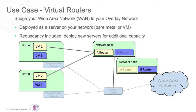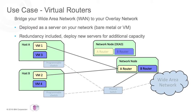Since this is the data center and not your home's network, we make sure that a network node has redundancy. Therefore, if a network node fails, the virtual routers running on it will fail over to another network node. In this example, I simulated a failure of the network node, and now both routers are running through the secondary network node.